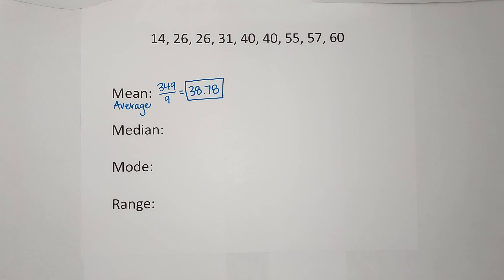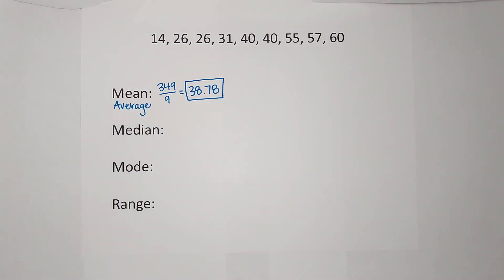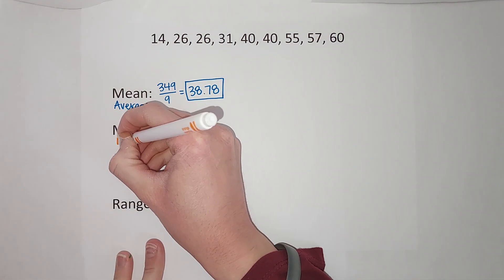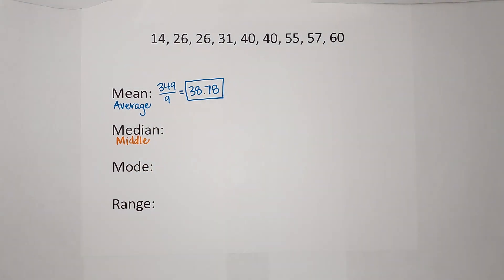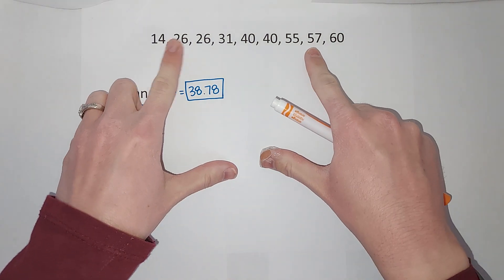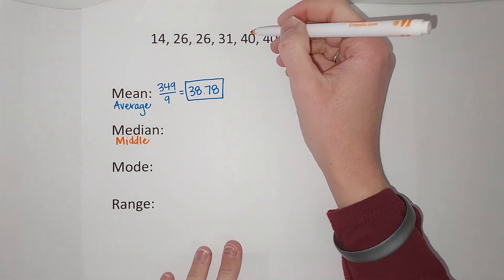That is my mean or my average of this set of numbers. The median is the middle. So it's the middle number in this set of numbers. This is where it's really important that the numbers are in order. I'm literally just going to count to the middle and my median or my middle is 40.